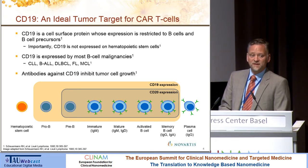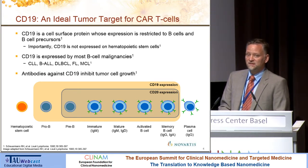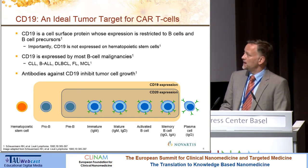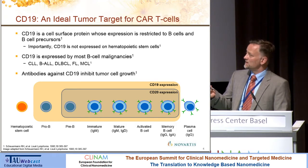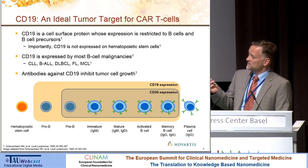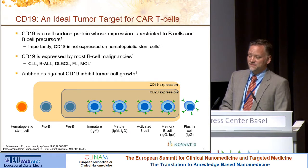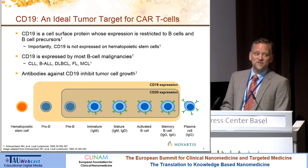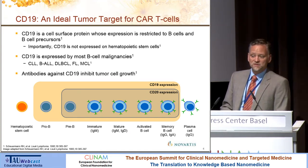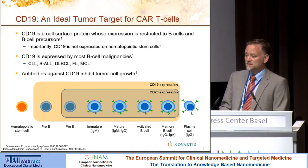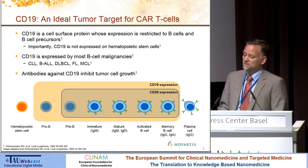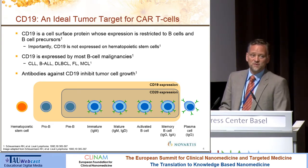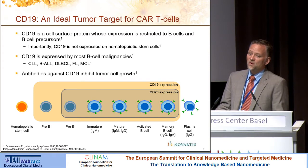The target we are looking at is CD19. It's an ideal tumor target because it's expressed only on lymphatic tissues and not on hematopoietic stem cells, but only on more mature cells up to the stage of plasma cells. CD19 is expressed not only on normal tissue but also on malignant tissue such as chronic lymphatic leukemia, acute lymphoblastic leukemia, and other forms of lymphomas. Compared to CD20, which is the current target for immunotherapy, it offers a broader spectrum.